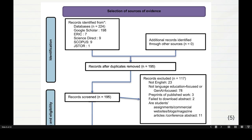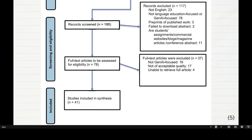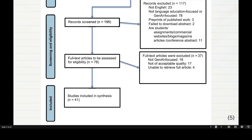So the total was 222 records, and after duplicates were removed, 195 remained. From the 195, I filtered out non-English, non-AI-focused papers, and pre-prints of published work — taking the published version where available. That narrowed it down to 78, and then from the 78, I also removed papers that were not Gen.AI-focused, not of acceptable quality, or not retrievable. That leaves 41 papers for my scoping review study.